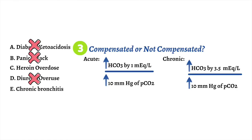As a result, this is an acute process, indicating chronic bronchitis is likely the wrong answer and heroin overdose is the right answer. Heroin overdose causes respiratory depression, leading to a decreased rate of breathing and acute CO2 retention, leading to acidosis.